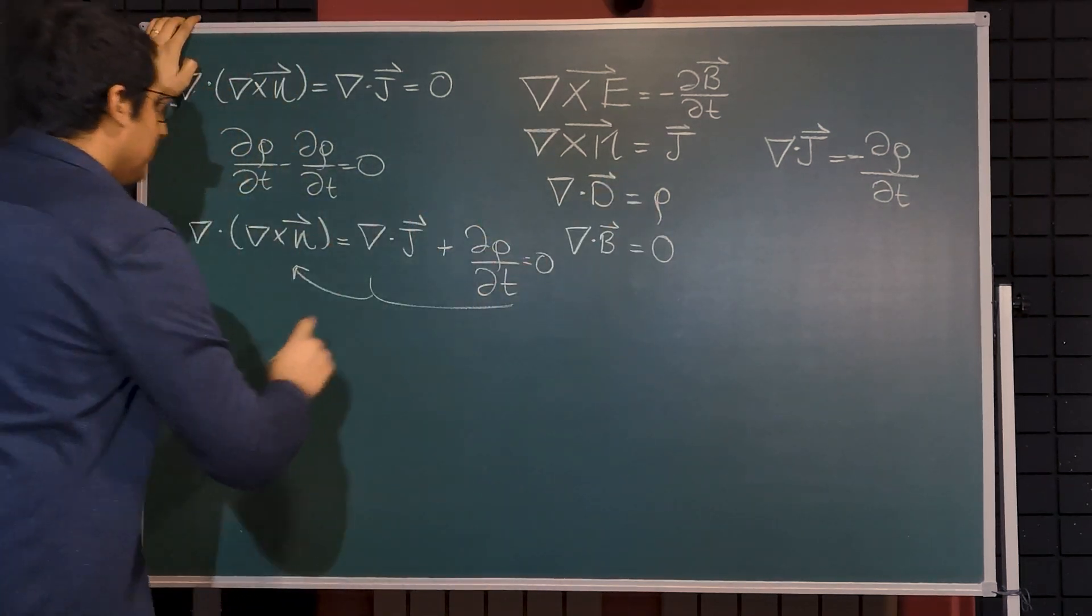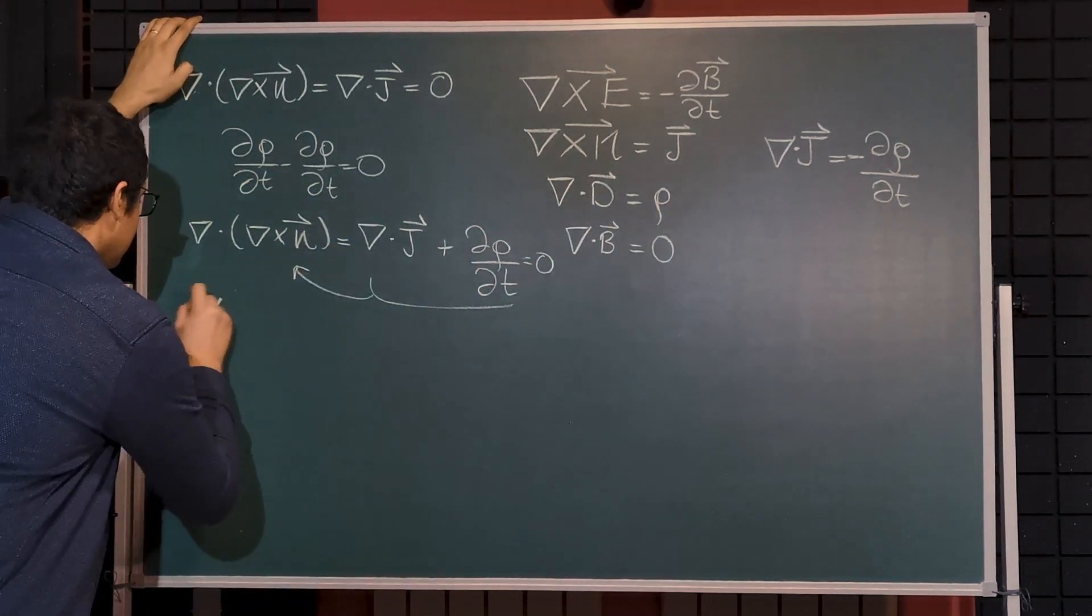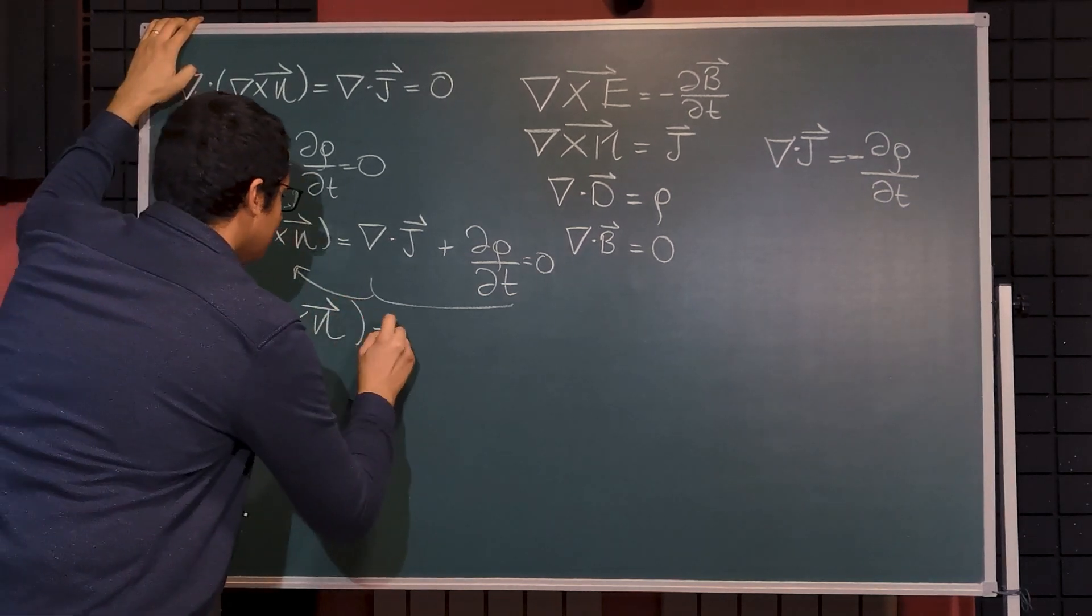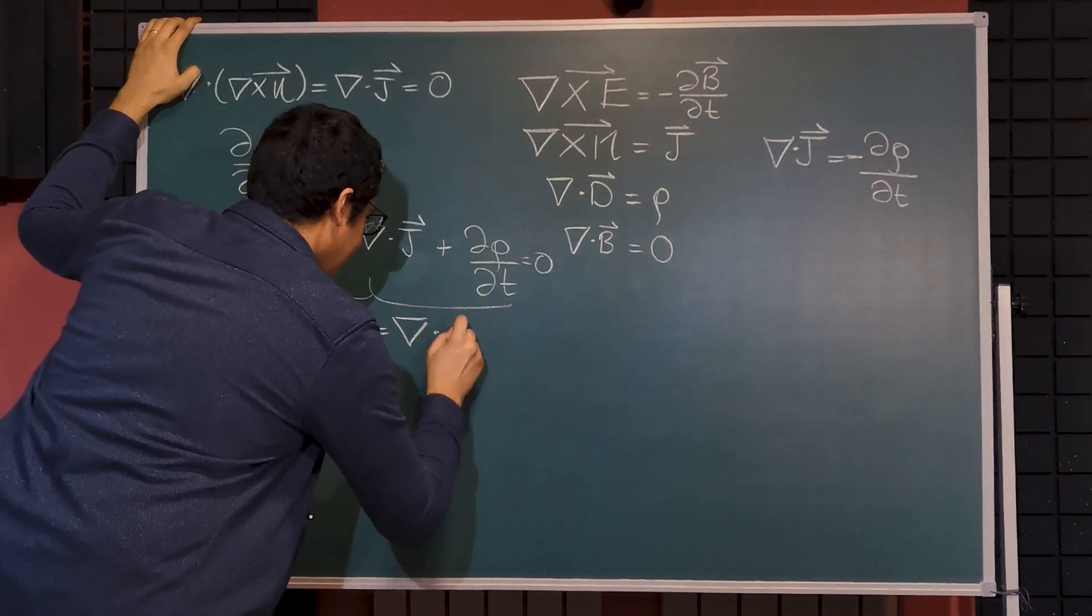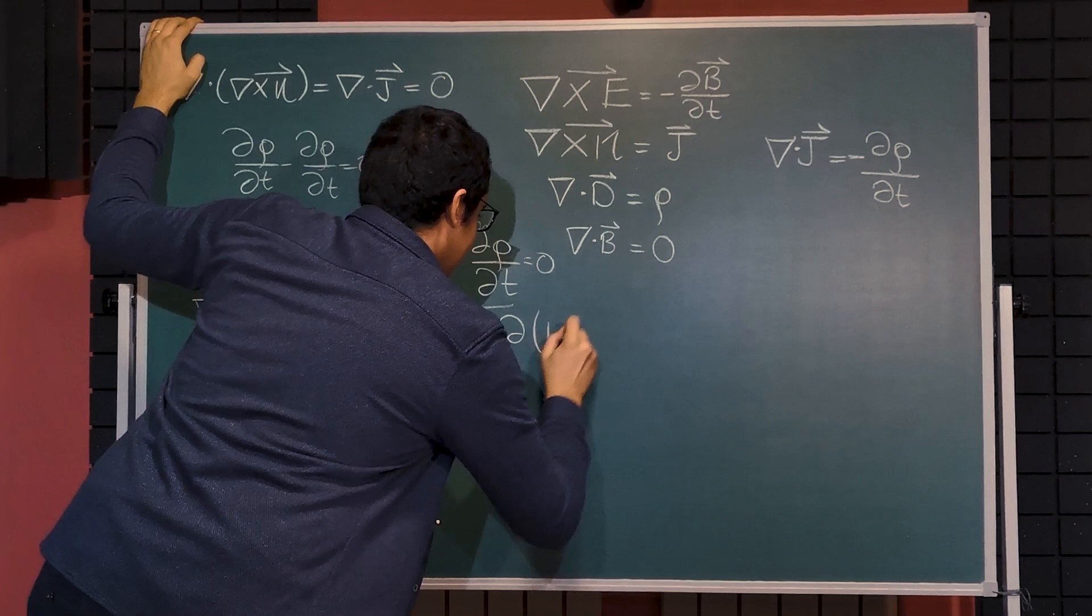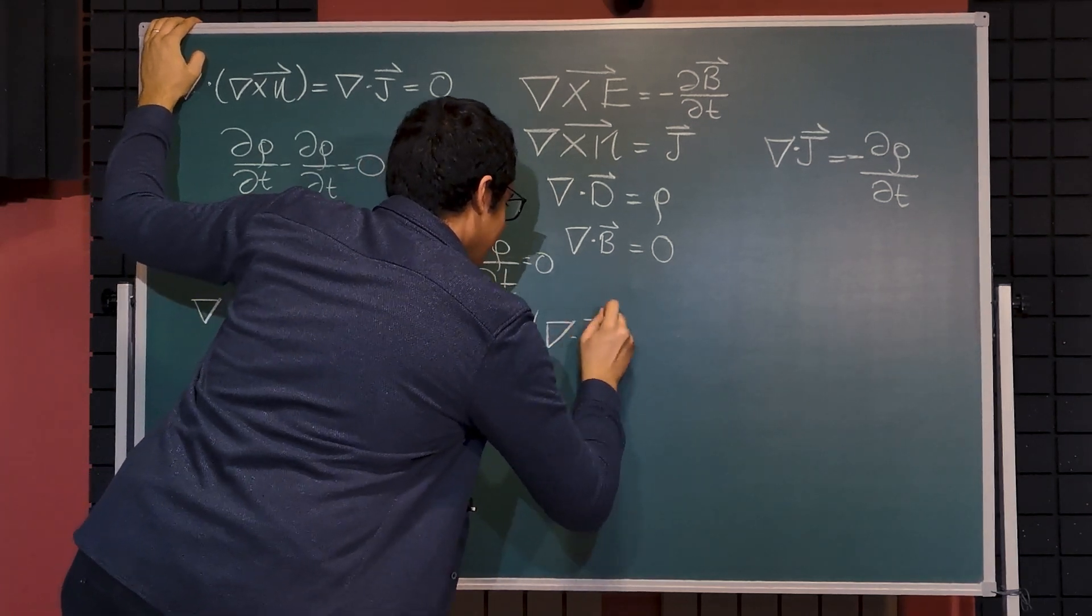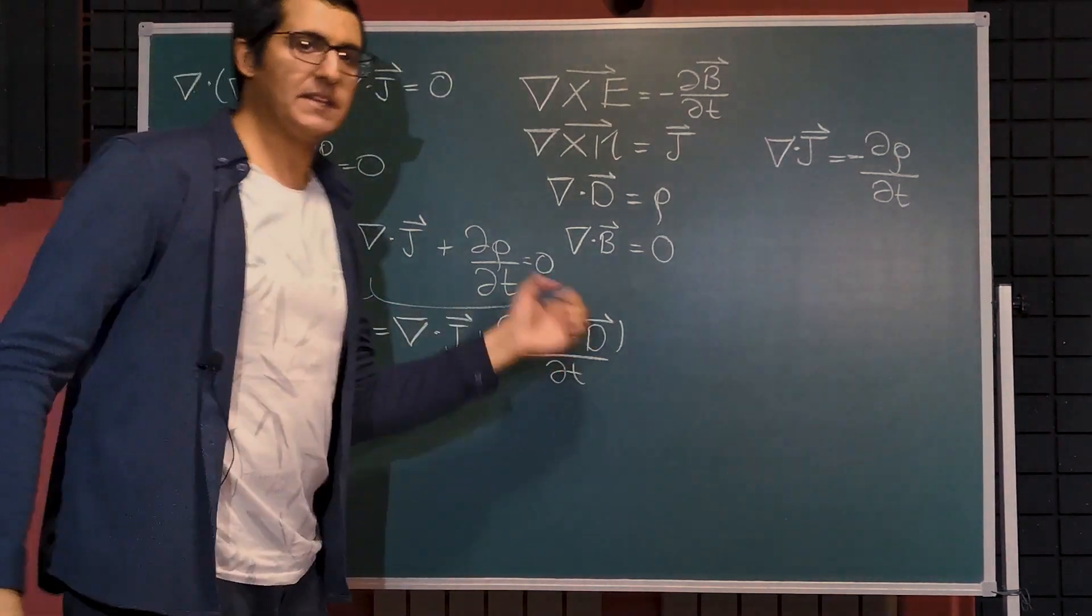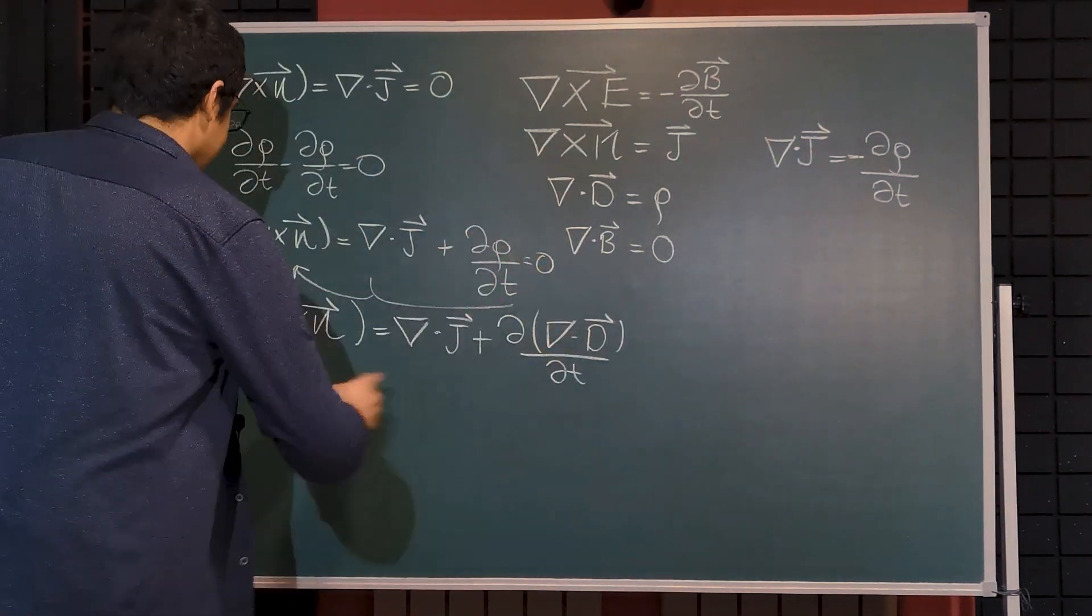since the divergence of D is actually the ρ, we can put divergence of D instead of ρ, which will be as follows. Curl of H be equal to divergence of J plus partial divergence of D, partial t. And we can take the divergence outside because it's a linear operator and cancel all the divergences.